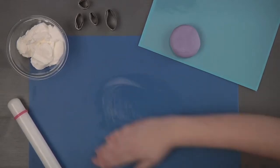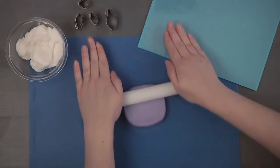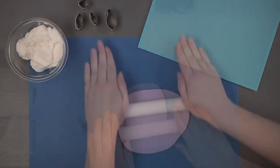Spread a thin film of shortening on a clean, smooth surface. Roll out the gum paste to 1/16th of an inch thick.